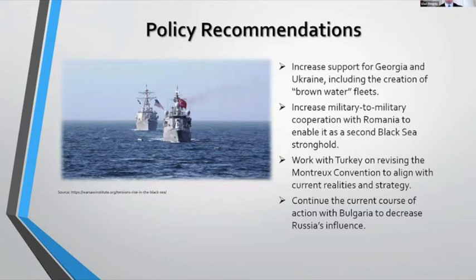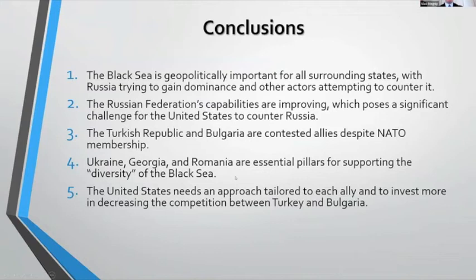For policy recommendations: the United States needs to increase support for Georgia and Ukraine, including helping create brown water fleets; increase military-to-military cooperation with Romania to enable it as a second Black Sea stronghold; work with Turkey on revising the Montreux Convention to align with current realities; and continue the current course of action with Bulgaria to decrease Russia's influence. The paper concludes that the Black Sea is geopolitically important for all surrounding states, Russian capabilities are improving, Turkey and Bulgaria are contested allies, and Ukraine, Georgia, and Romania are essential pillars for supporting diversity in the Black Sea.